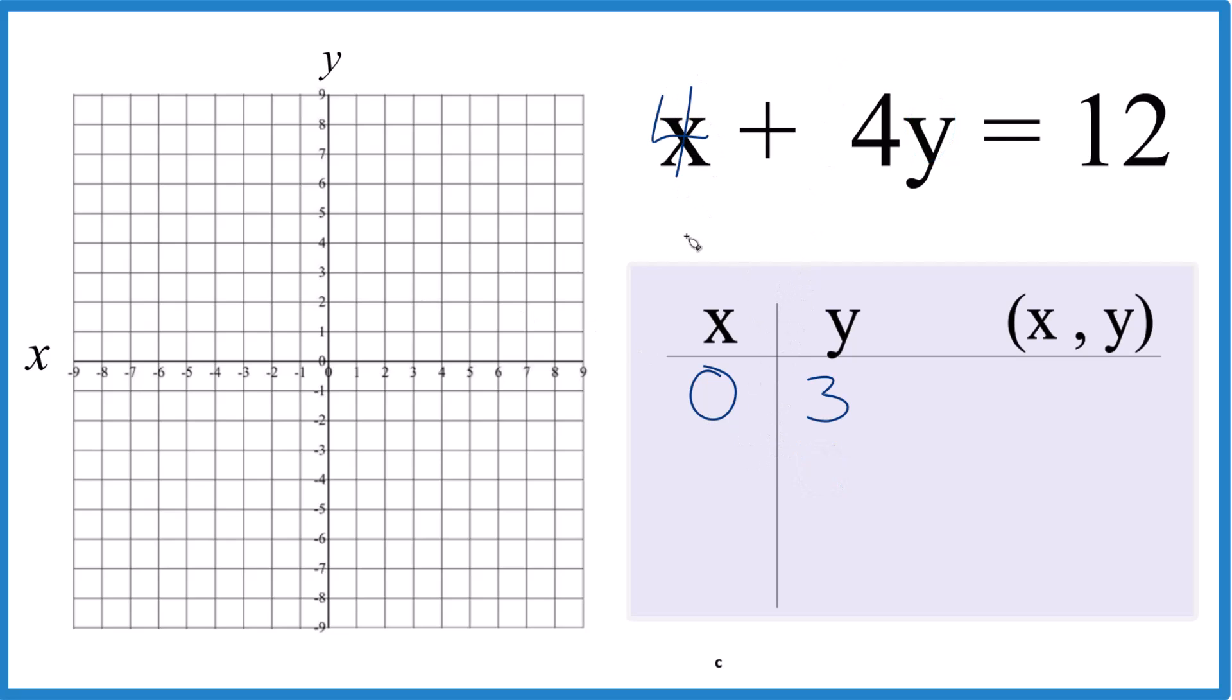Let's say x is 4. Because if x is 4, we have 4 plus 4y equals 12. Subtract 4 from both sides. 4 minus 4 is 0, so we have 4y equals 8. Divide both of these by 4. That way 4 over 4 is 1, and then we have 8 over 4 is 2. So x is 4, y is 2. That'll fit nicely.